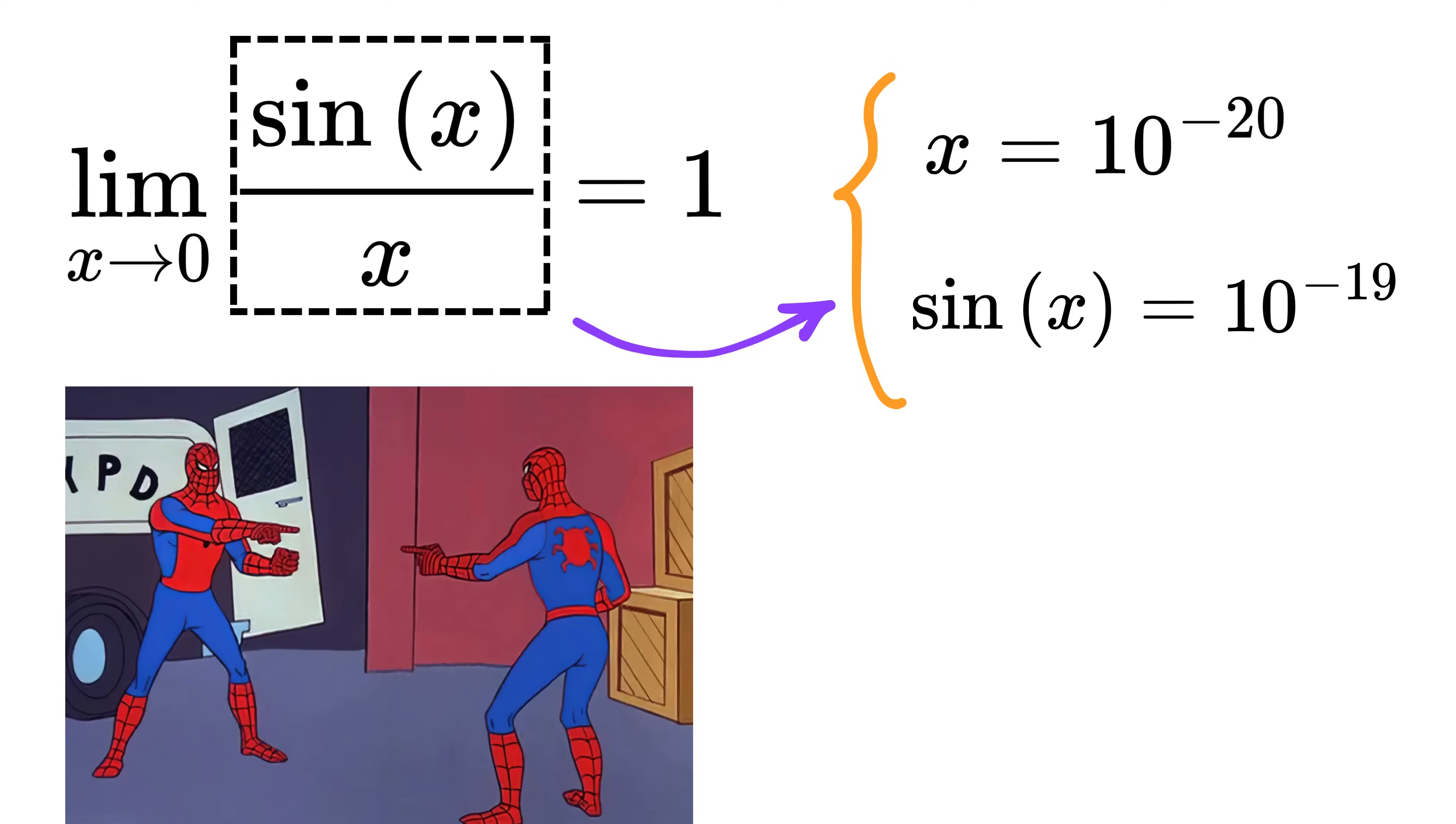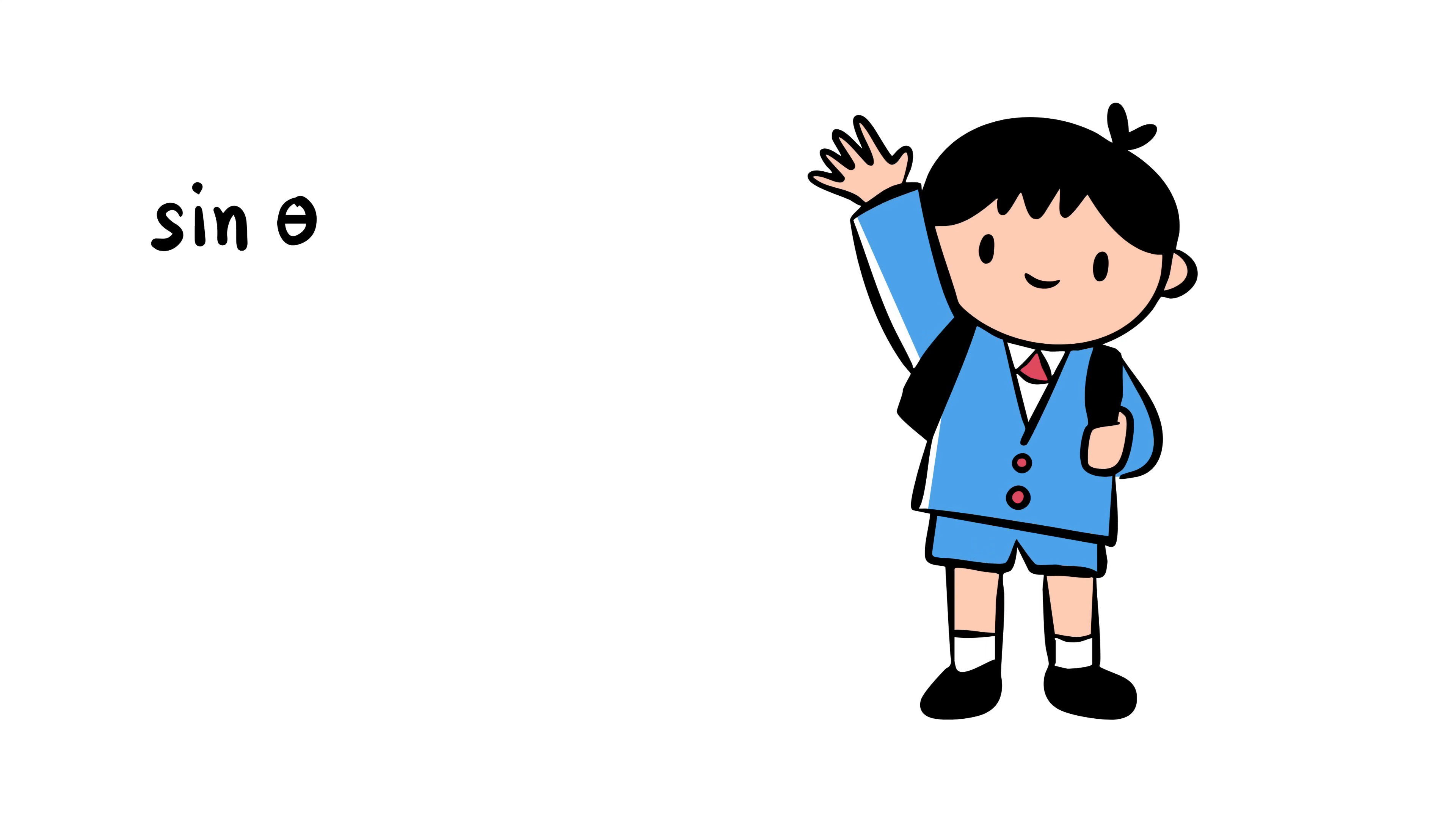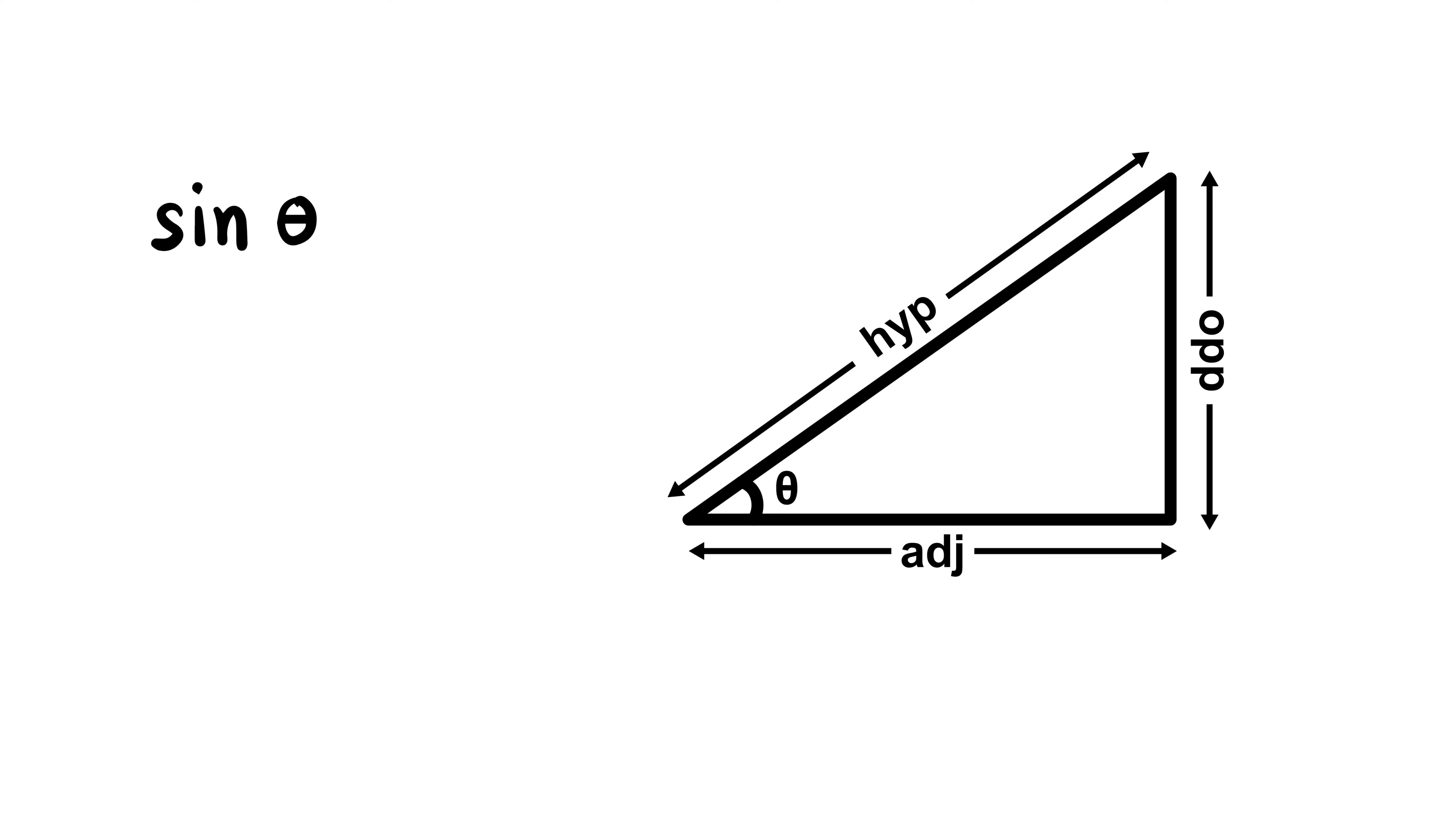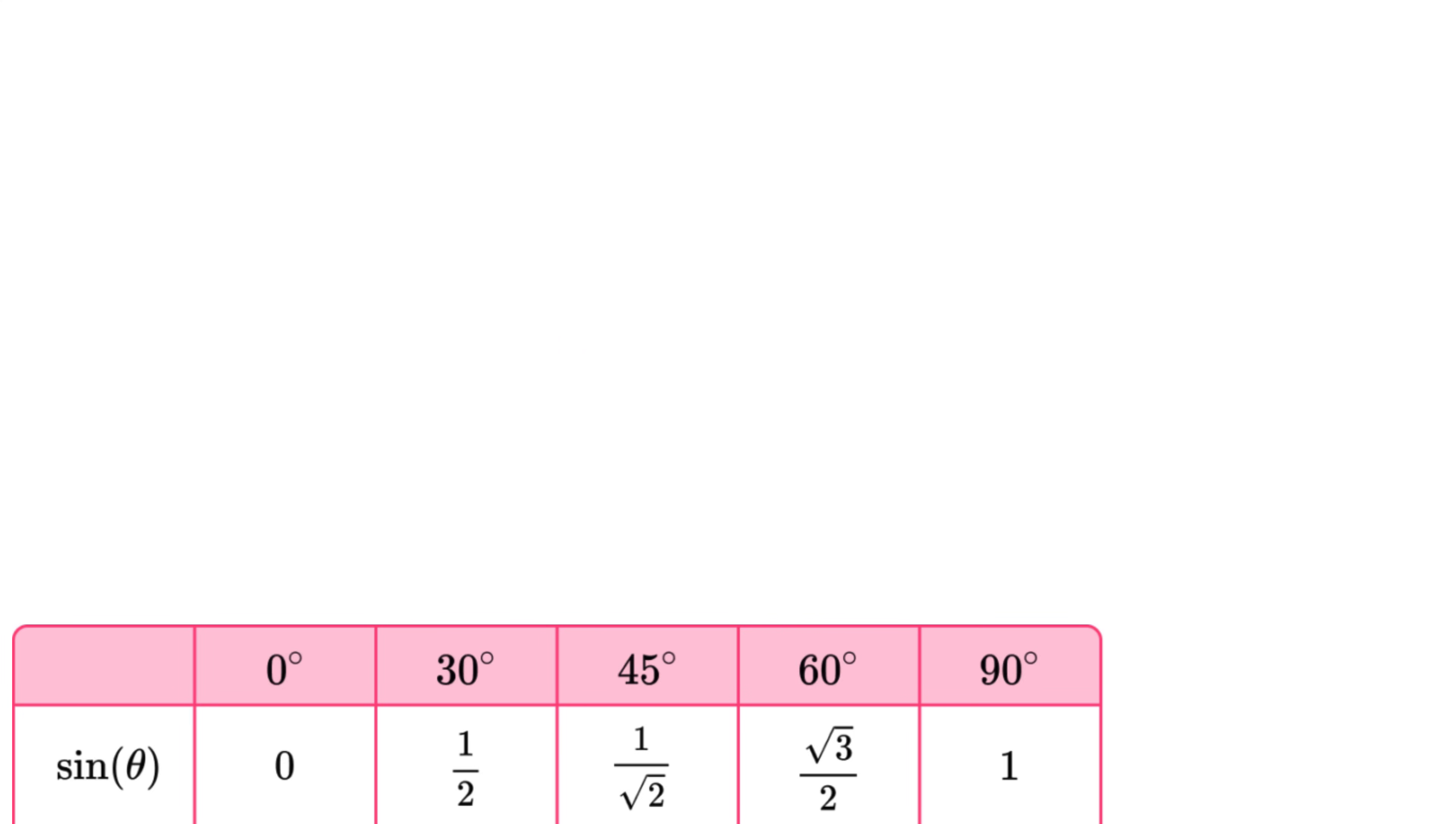To understand how close they are to each other, we need to understand what sin(x) actually is. You might remember from school in a right-angled triangle, sine of an angle is defined as the opposite side divided by the hypotenuse. You might also remember the values of sin(x) for standard angles. If you plot sin(x) on a graph with the angle x on the horizontal axis and the value of sin(x) on the vertical axis, you will see something interesting.